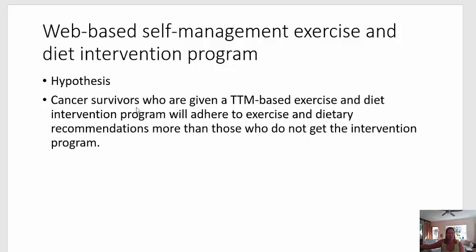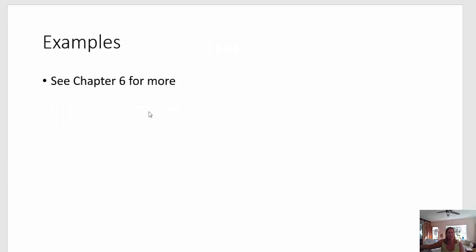You can have just one slide where you state the null and the alternative. Please go to Chapter 6 — there are a few theories there, and in the little yellow text boxes it will show an example of how each theory was used in an intervention.